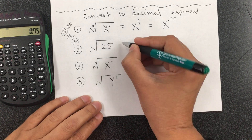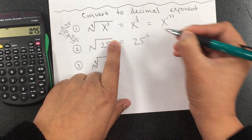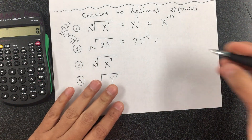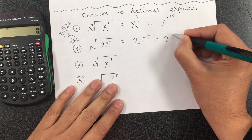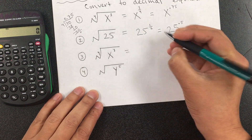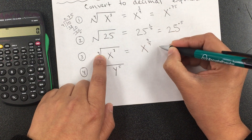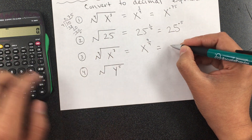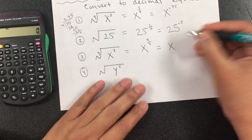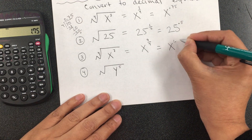Next: convert to decimal form. For the square root of 25 — it doesn't have an exponent, so the numerator is 1; it doesn't have an index, so the denominator is 2. You already know 1 ÷ 2 = 0.5, so it's 25 to the 0.5. For the next one, keep the same base; the exponent becomes the numerator and the index becomes the denominator. We divide 7 by 4, which gives 1.75.